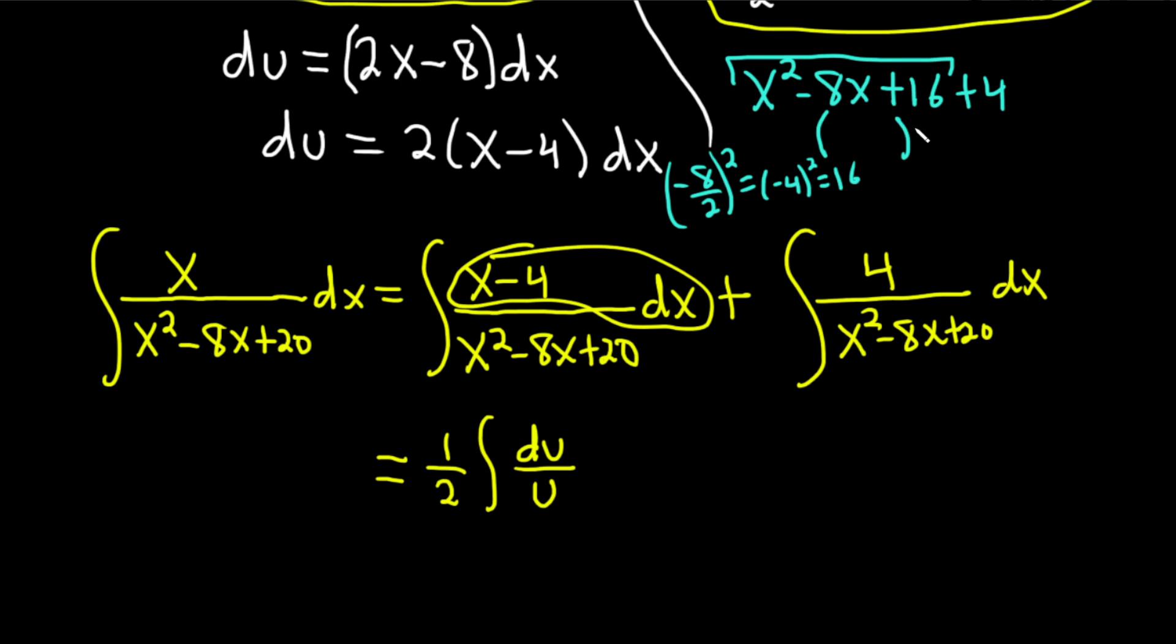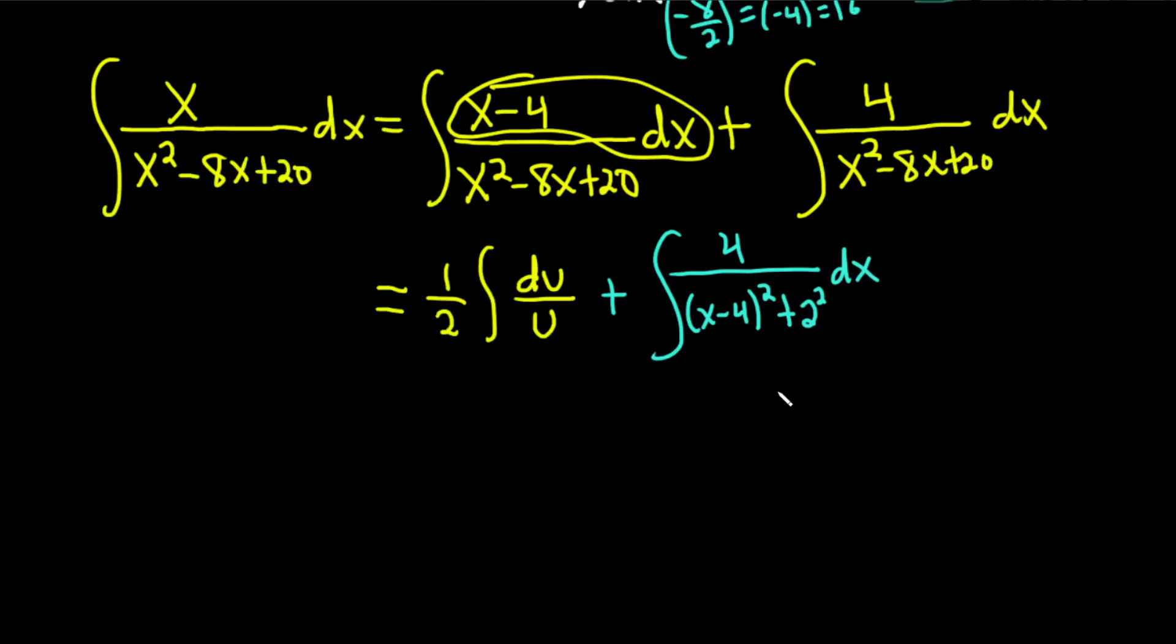You know this always factors. You always put a parenthesis and a 2. You keep the x, keep the sign, keep the sign, and divide this number by 2 so you get 4. So this is going to be the bottom part here. Let's go ahead and rewrite this as 4 over x minus 4 squared plus 4, which I'm going to write as 2 squared. And the reason I'm doing that is there's a formula we're going to use for this one.